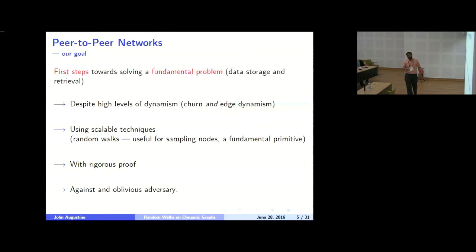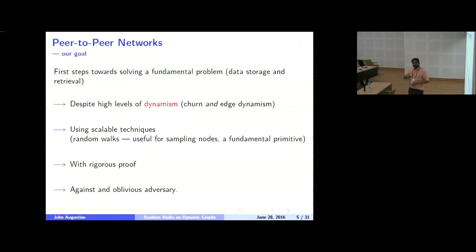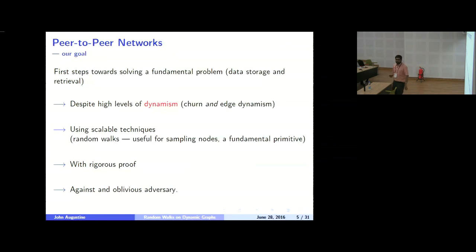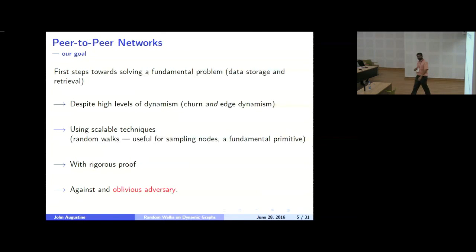Our goal was to take a very fundamental problem in peer-to-peer systems: take a single data item — a key-value pair — and store it in the network despite the dynamism. If you just store it in one or two nodes, those nodes can leave and the item is gone. We wanted to use simple, scalable techniques, and that's where random walks come in. We want to use random walks to do much of this work and give rigorous proofs against an oblivious adversary.